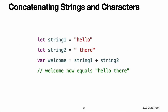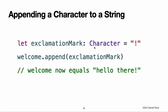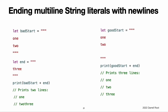Concatenating strings and characters. String values can be added together or concatenated with the addition operator to create a new string value. You can also append a string value to an existing string variable with the addition assignment operator. You can append a character value to a string variable with the string's append method. Note: you cannot append a string or character to an existing character variable because a character value must contain a single character only. If you are using multi-line string literals to build up the lines of a longer string, you want every line in the string to end with a line break, including the last line.